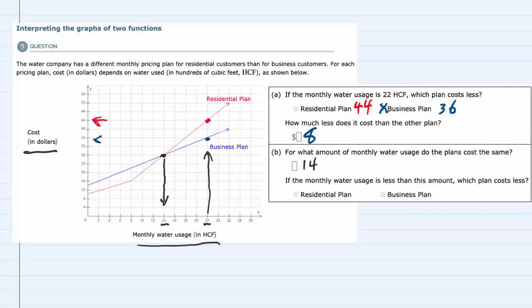The second part of that question is: if the monthly water usage is less than this amount, which plan costs less? If we look up from these values where the usage is less than 14, which plan costs less? Well, the red plan is underneath the blue plan for each of those values, and the red plan being residential, it is the one that costs less.